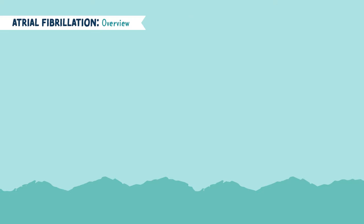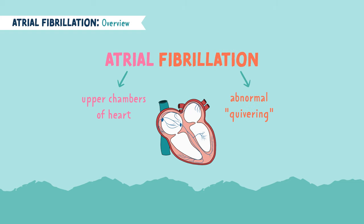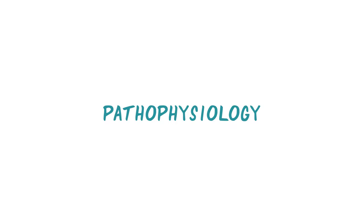Let's begin by breaking down the name atrial fibrillation. Atrial refers to the atria, or the top two chambers of the heart, and fibrillation is a term used to describe an inappropriate rhythm or a quivering. So AFib is an irregular rhythm and you may find that the beats have no rhyme or reason — they are quivering.